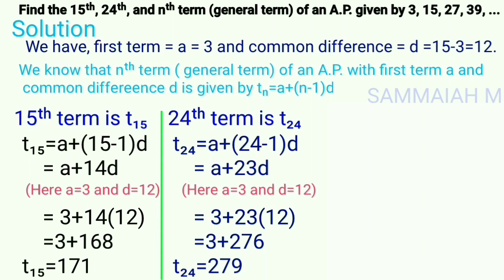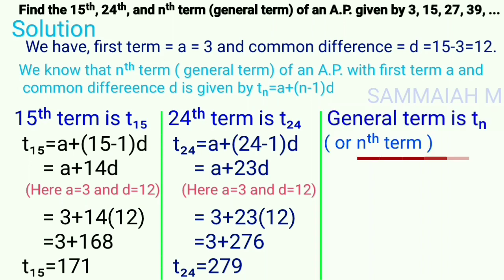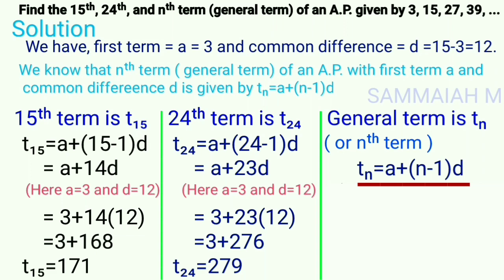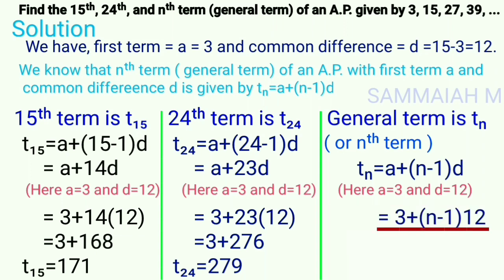Next, we find the general term or nth term. The general term is tn = a + (n − 1) × d. Here a = 3 and d = 12. Substituting: tn = 3 + (n − 1) × 12 = 3 + 12n − 12. So tn = 12n − 9.